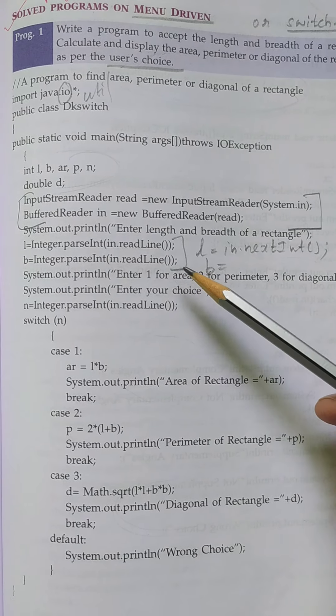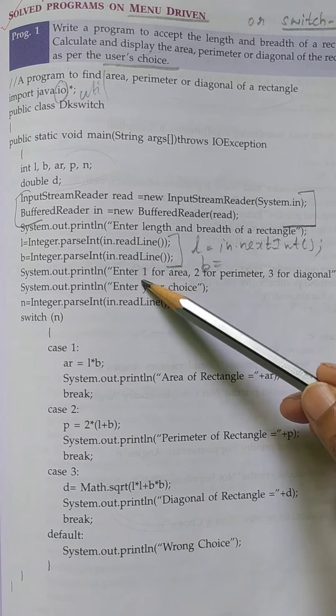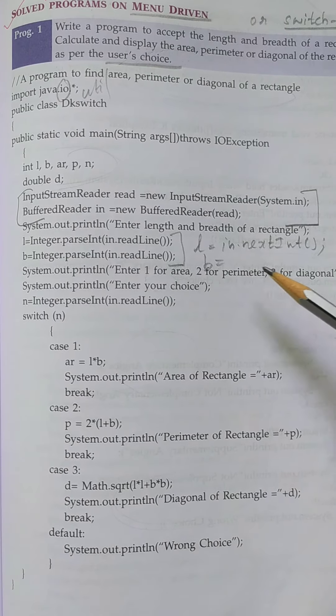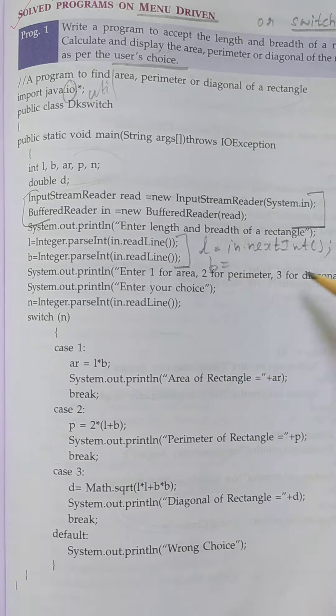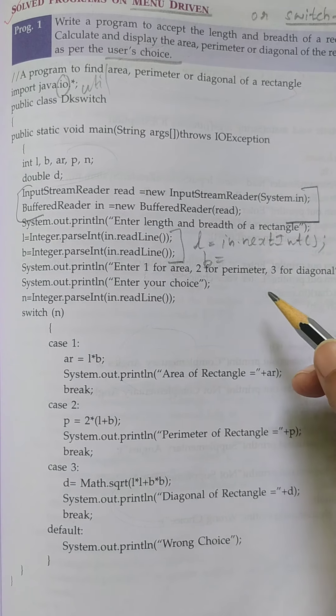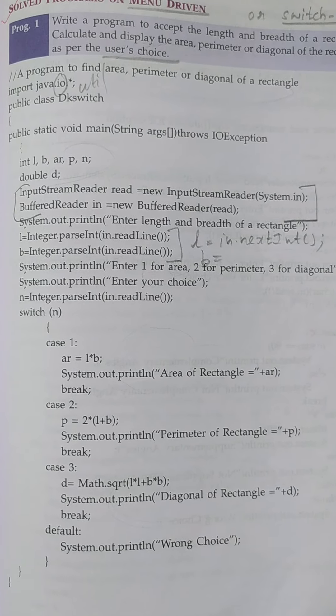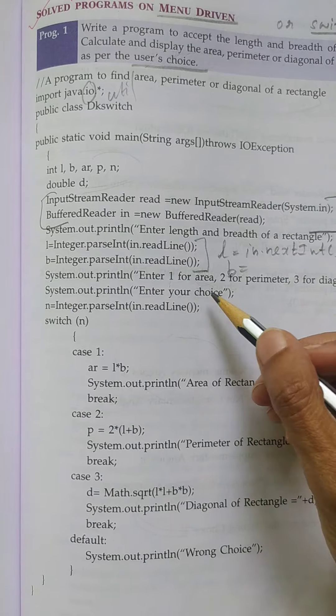By seeing this, the user will, if he wants to calculate the area, he will press the button—press the key on the keyboard. If he wants to find perimeter, he will press the key two. 'Enter your choice'—it should be there in the display, then only the user can know which button he could be able to press.